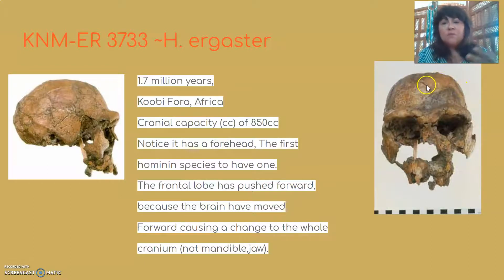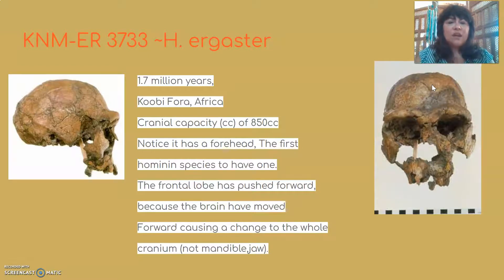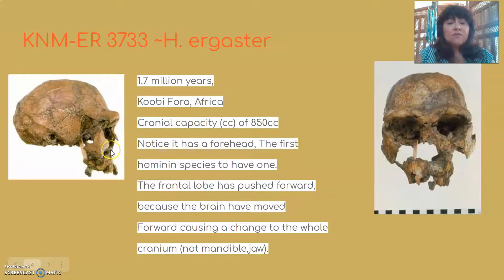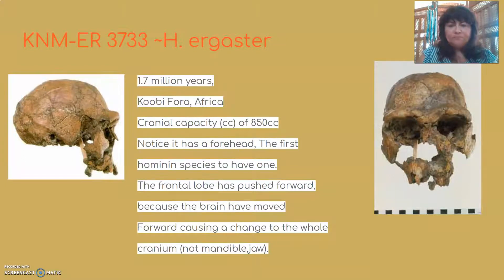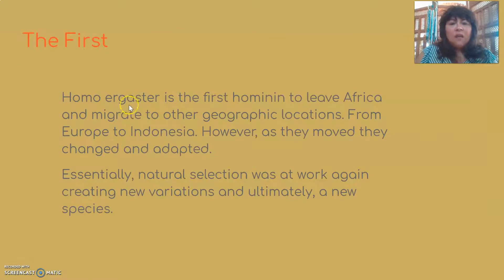These rounded areas are the parietal bosses, and we still have that trait. You can also see the nasal bone sticking out of the face — for the first time we have a Homo species with a nose projecting outward, rather than pushed in as we saw in the australopithecines.